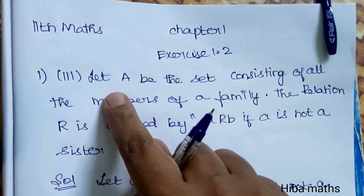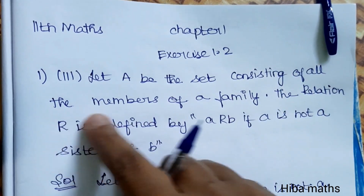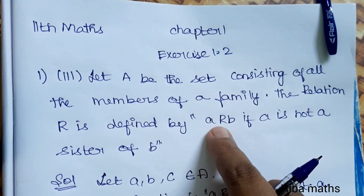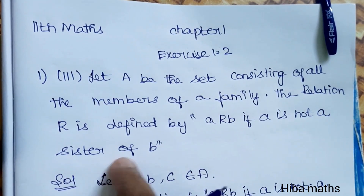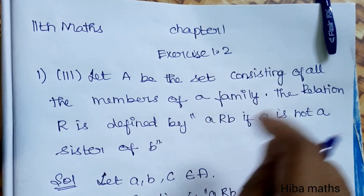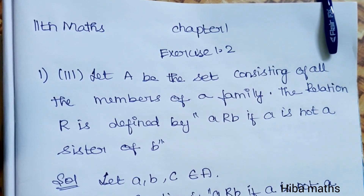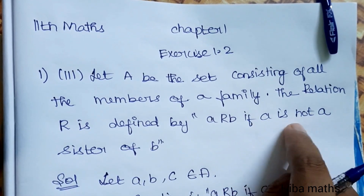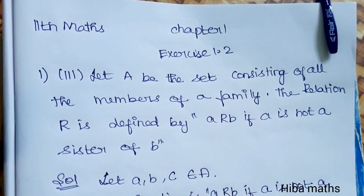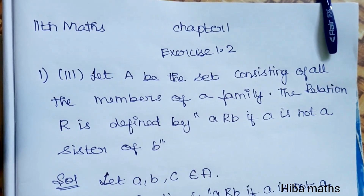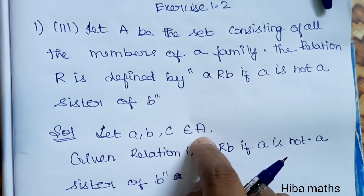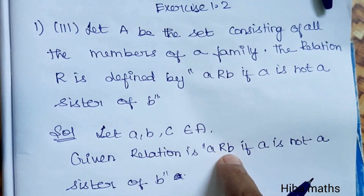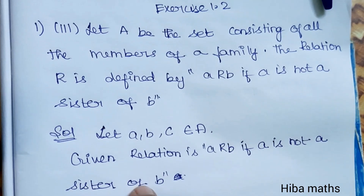First question: Let A be the set consisting of all the members of a family. The relation R is defined by: A relates B if A is not a sister of B.